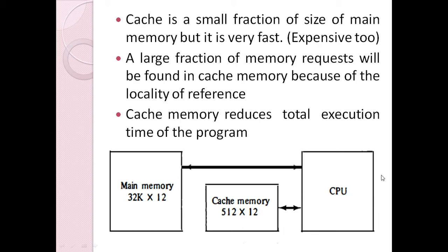Here we have the CPU, the cache, and the main memory. Whenever the CPU requires something from main memory, it will first look in the cache memory. If a copy of that data is available in cache, it is called a hit. When the CPU wants something which is not available in cache, it will go to main memory to retrieve it — this is called a miss.